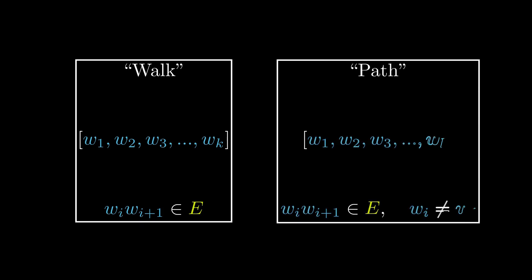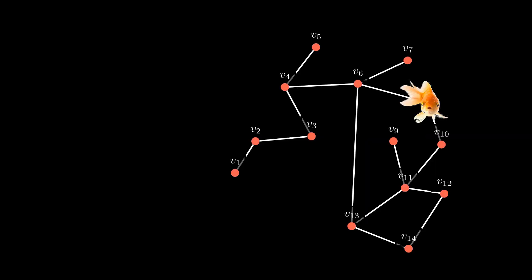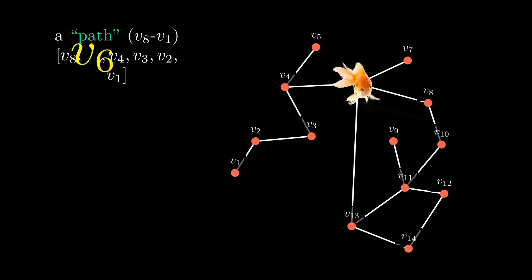When all the vertices in a walk are distinct, we call it a path. This is an example of a path in a graph G, from V8 to V1. So, path is actually an efficient walk.